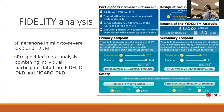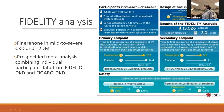Fidelity was a pre-specified meta-analysis combining both Fidelio and Figaro to look at outcomes with finerenone across a wide range of CKD from mild to severe. The cardiovascular outcome was primary and kidney outcome was secondary. Overall, it showed a 14% reduction in composite cardiovascular outcome and a 23% reduction in composite kidney outcome.